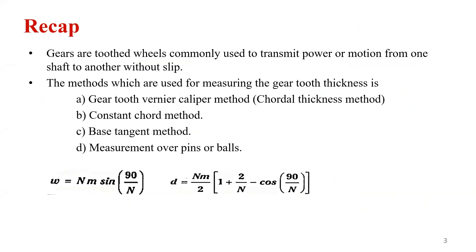In Lecture 4, we understood what a gear is. A gear is a toothed wheel commonly used to transmit power or motion from one shaft to another without any slip. We have seen the different types of gears: spur gears, helical gears, bevel gears, and hypoid gears. We also discussed the methods used for measuring the gear tooth thickness, that is using the vernier gear tooth caliper method — the chordal thickness measurement.